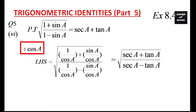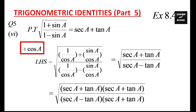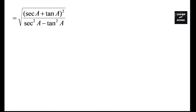We need the answer as secA + tanA only. So if we multiply and divide by (secA + tanA), it will be √((secA + tanA)(secA + tanA) / ((secA - tanA)(secA + tanA))). Look at the denominator — it is in the (A - B)(A + B) form, so it will be A² - B². And look at the numerator: secA + tanA is repeating 2 times, so we can rewrite it as √((secA + tanA)² / (sec²A - tan²A)).